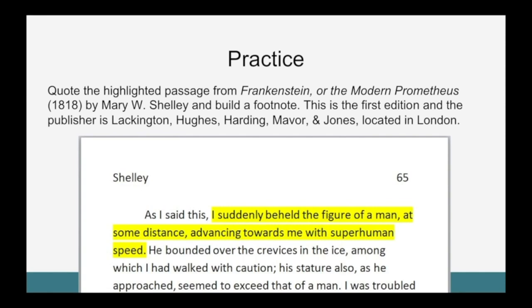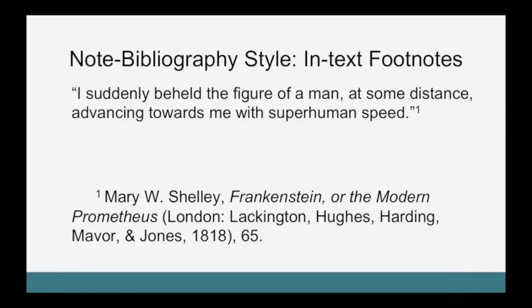For example, we might cite Mary Shelley's book Frankenstein or the Modern Prometheus, which was published in 1818 by the publisher Lackington, Hughes, Hardy, Maver, and Jones, located in London. Take a moment and try to write a footnote for this quote. Remember those four W's. You'll have your quote ending with the period and then the quotation mark, and lastly the footnote number. At the bottom of the page would be the full footnote citation — because this is the first citation to Shelley's book — with the author's full name, followed by the full title of the book in italics, then in parentheses all the facts of publication: the city, the publisher name, and the year of publication, and lastly the page number from which the quote came.